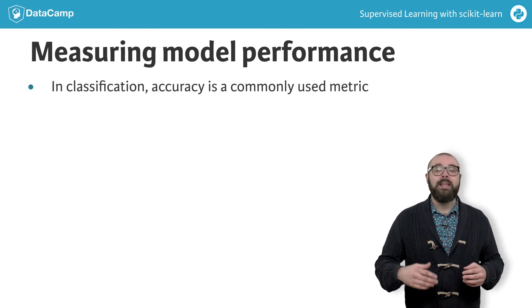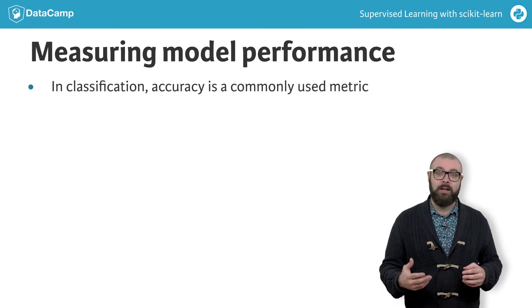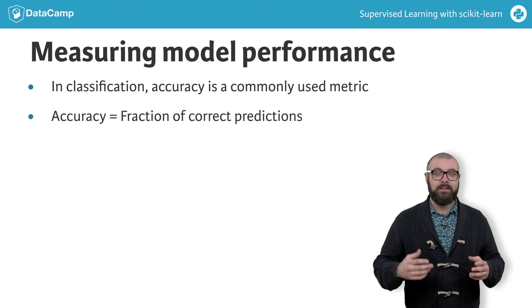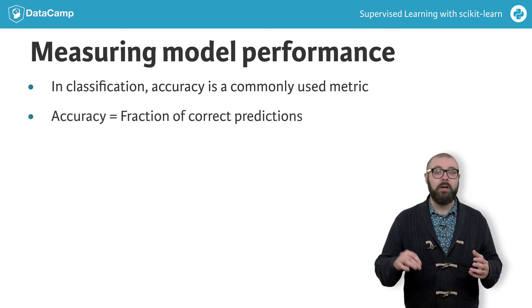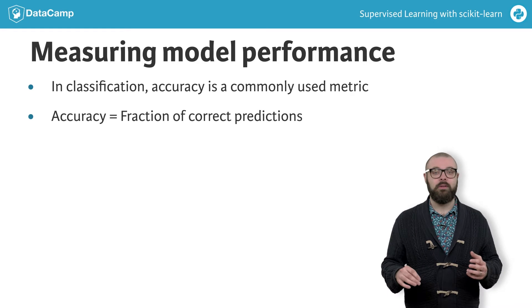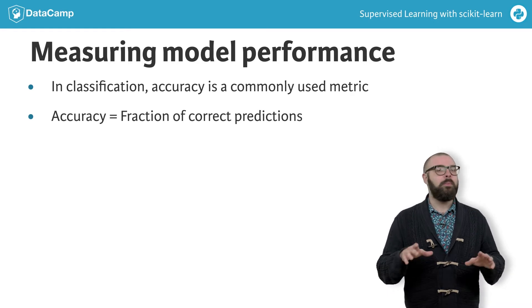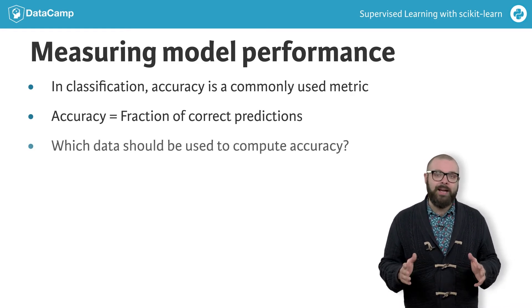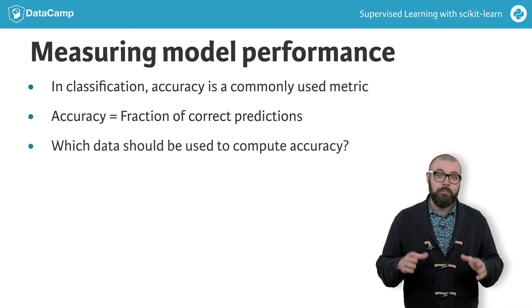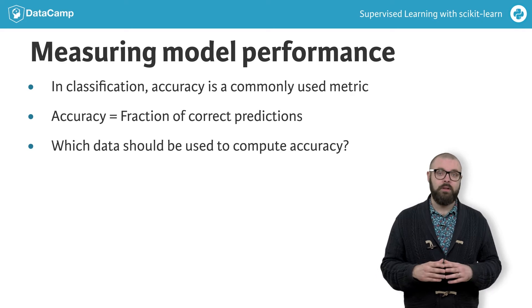The accuracy of a classifier is defined as the number of correct predictions divided by the total number of data points. This begs the question though: which data do we use to compute accuracy?